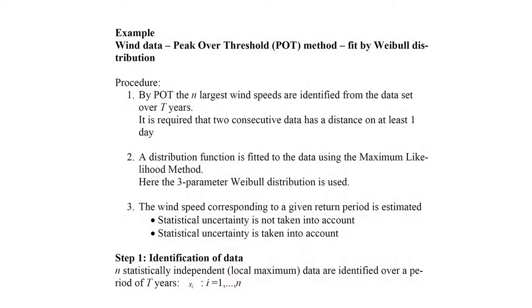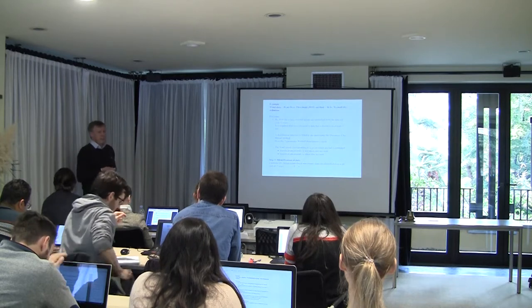We extract N data — the N largest wind speeds — from a data series covering T years. It is not necessary to extract just one data per year; there can be more per year. The next step is to fit a distribution function to these N data — here a Weibull distribution. This gives a model for the extreme wind speed, which can be used to estimate wind speeds with a given return period. The example also shows how to include parameter uncertainty when using the maximum likelihood method.